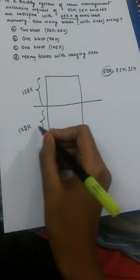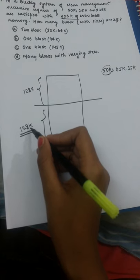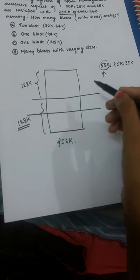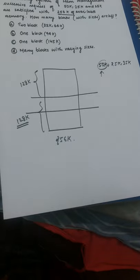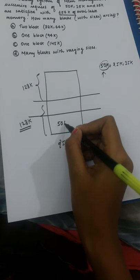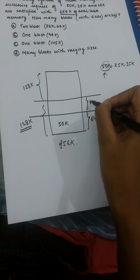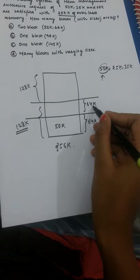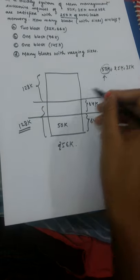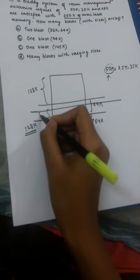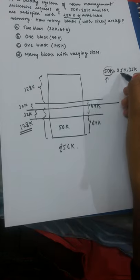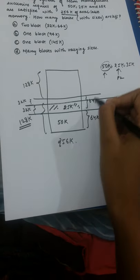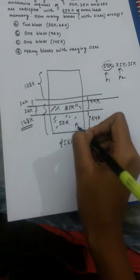Since 64K is also greater than 50K, we divide further into 64K and 64K. So 50K is allocated in the lower 64K block as P1. Next, for the 25K request, 32K is greater than 25K, so we divide the adjacent 64K into 32K and 32K. We allocate P2 in the lower 32K block.